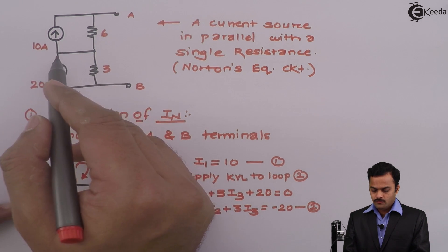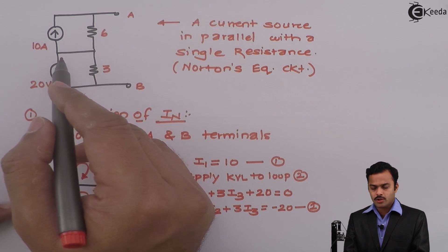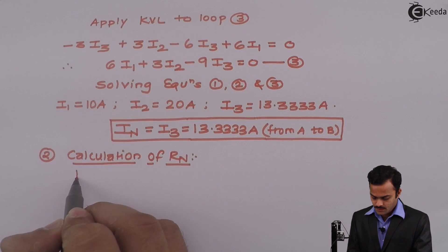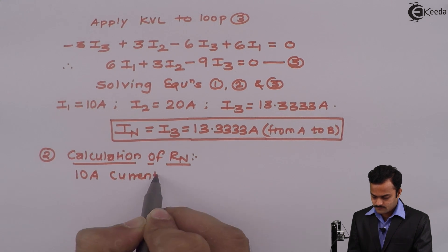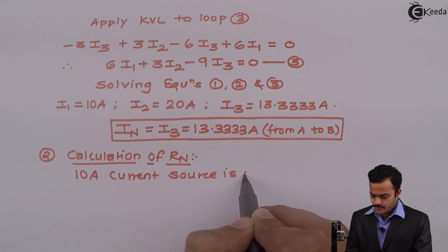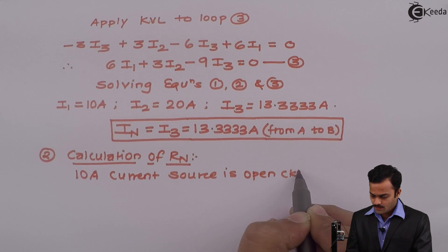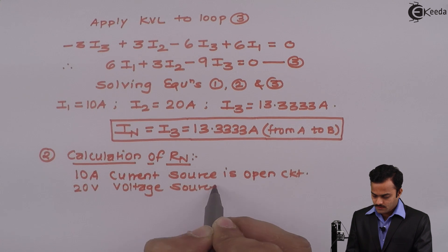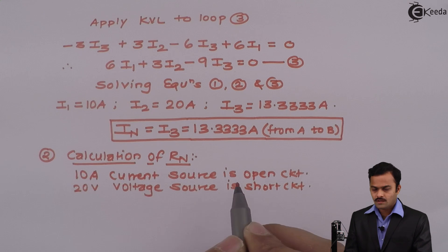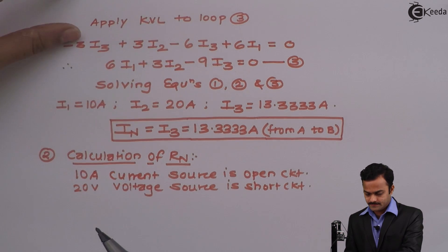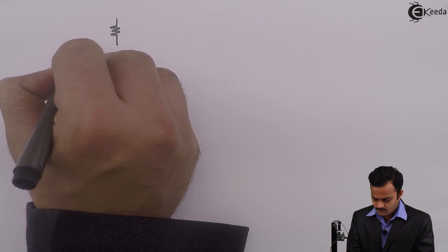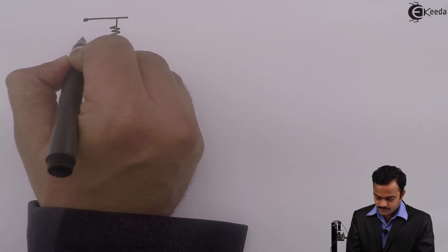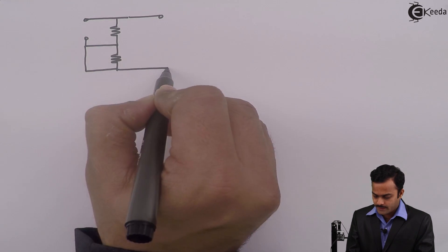Then we have a current source, we need to replace it by open circuit because internal resistance of ideal current source is infinite. Voltage source we need to replace by short circuit because internal resistance of ideal voltage source is 0. So I will write 10 ampere current source is open circuited and 20 volt voltage source we will short circuit.